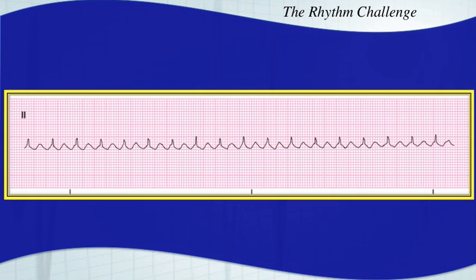These often confuse people, but this is a 2-to-1 atrial flutter. If you could just continue these sawtooth patterns right through the QRS complexes, or cover the QRS complexes, it becomes very easy to see that sawtooth pattern. Or if you just flipped it upside down in your head and saw the sawtooth pattern going across the bottom, it might make it easier. It's a 2-to-1 atrial flutter.